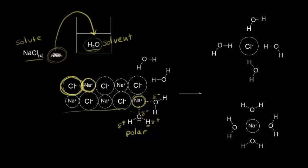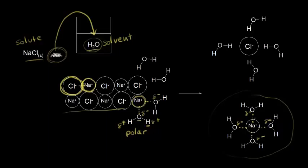The water molecules are going to pull off the sodium cations and eventually give you this situation where the partial negative oxygens interact with the sodium cation. The water is a dipole and the sodium cation is an ion, so we call this an ion-dipole interaction. The water molecules break the ionic bonds, pull off the sodium cation, and surround it. We call this process hydration — where the ion is surrounded and stabilized by a shell of solvent molecules.